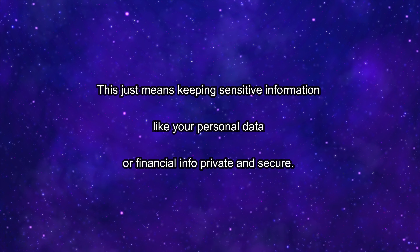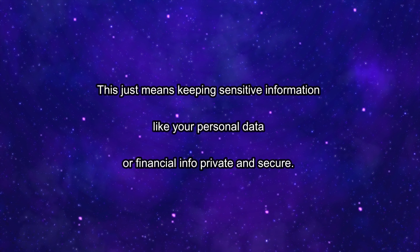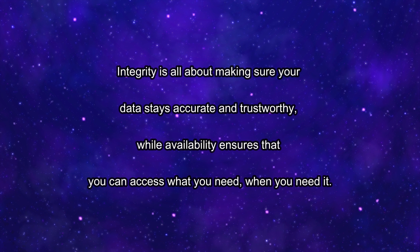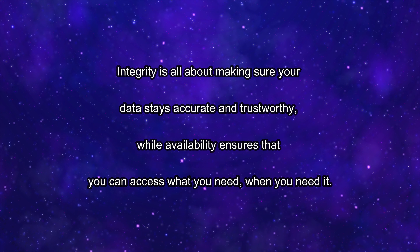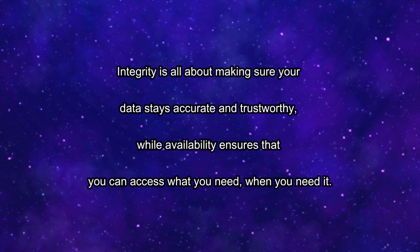First up is confidentiality. This just means keeping sensitive information like your personal data or financial info private and secure. Integrity is all about making sure your data stays accurate and trustworthy, while availability ensures that you can access what you need when you need it.